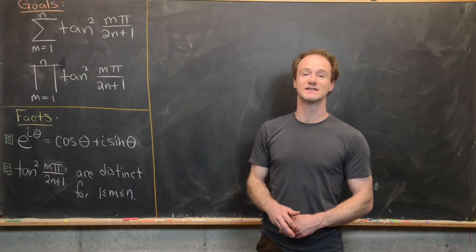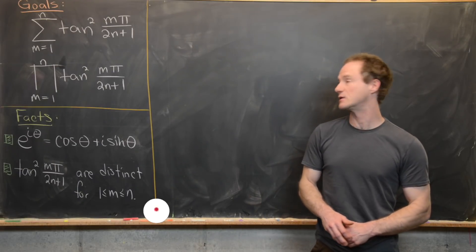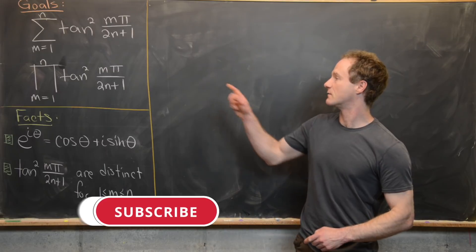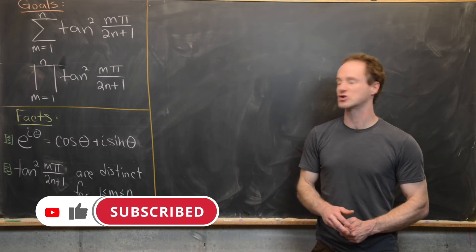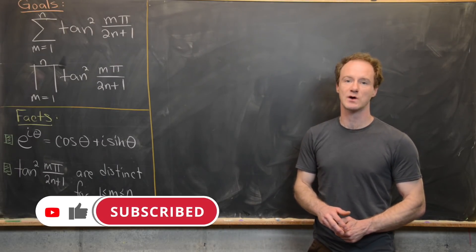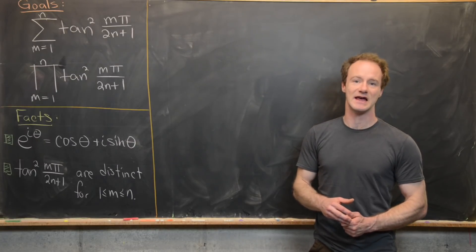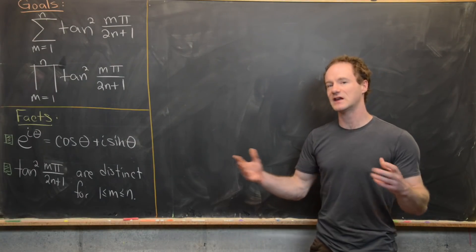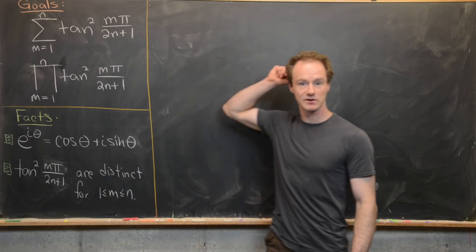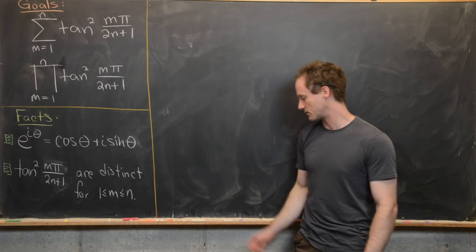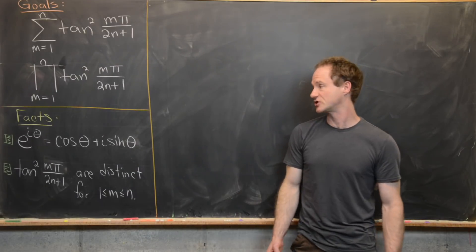We're going to look at both the sum and the product of a certain sequence of numbers: tangent squared of m times pi over 2n plus 1, where m ranges between 1 and n. By the end of the video, we'll have a closed form for both the sum and the product of these numbers, using only elementary techniques.